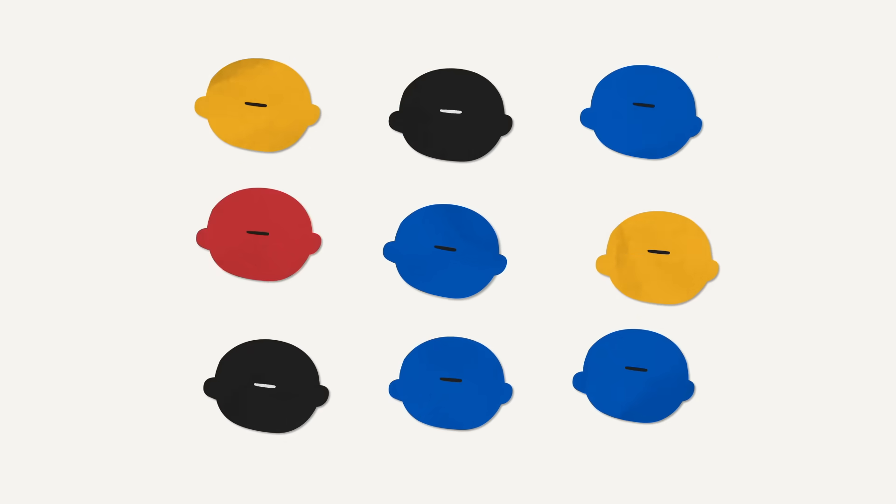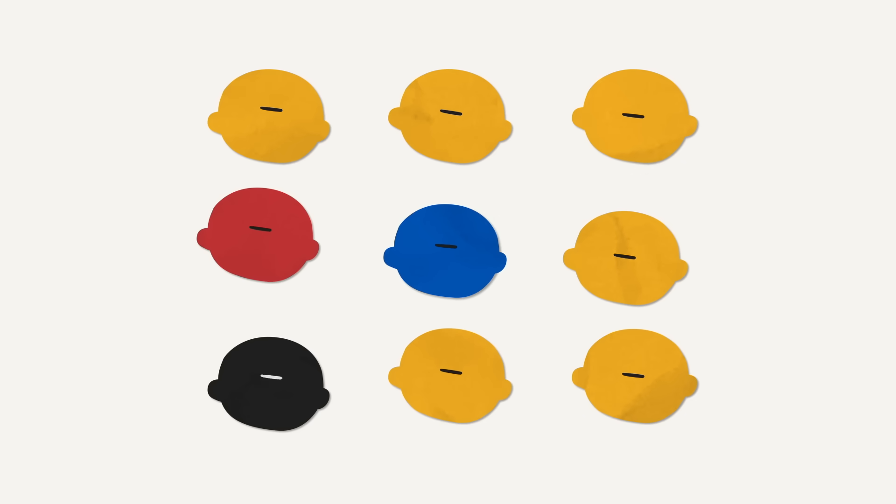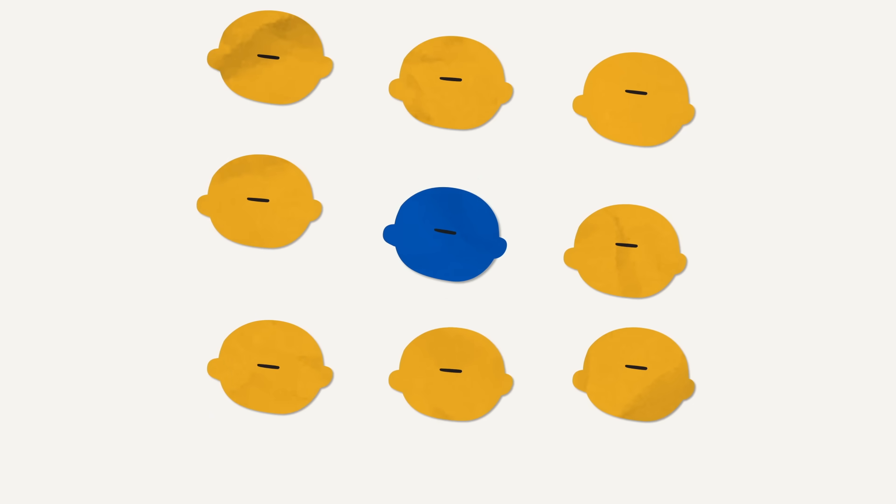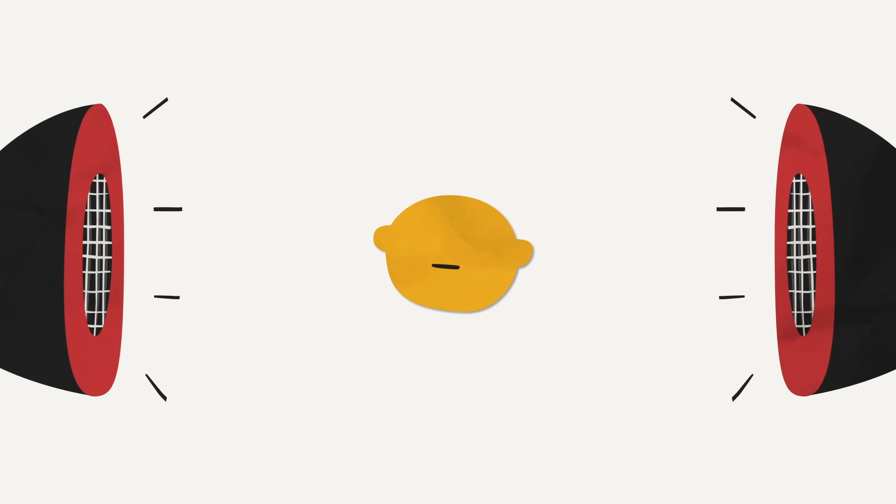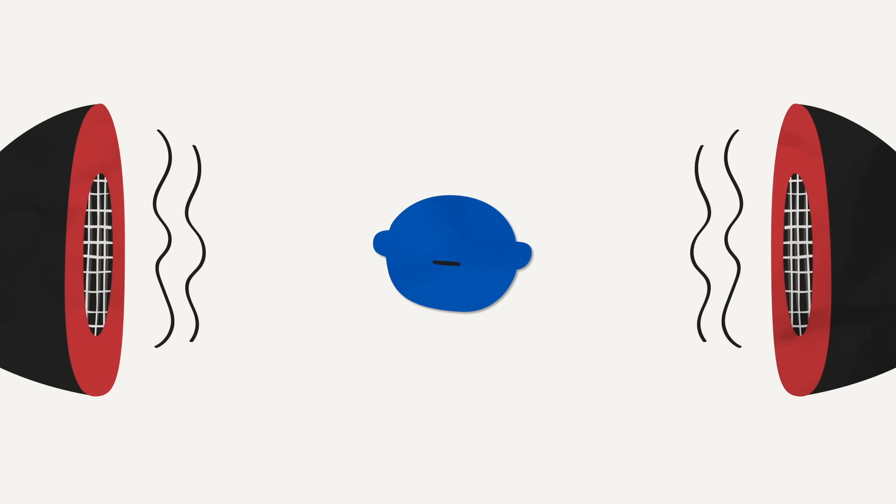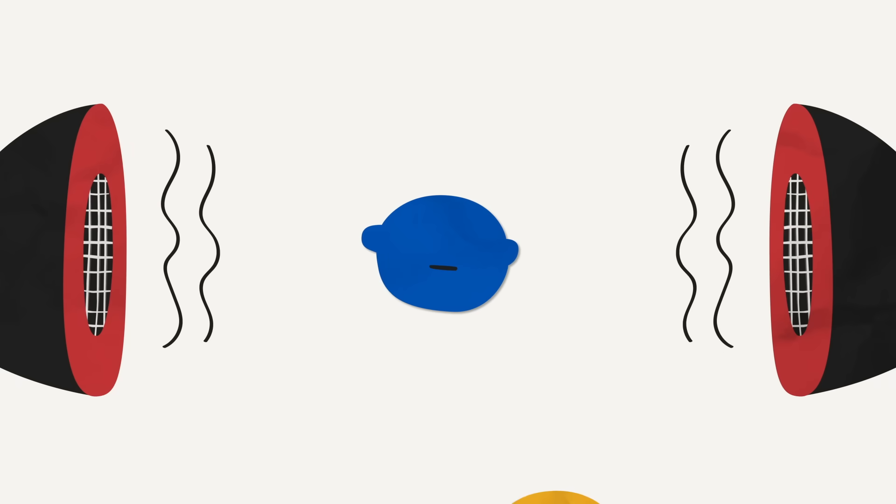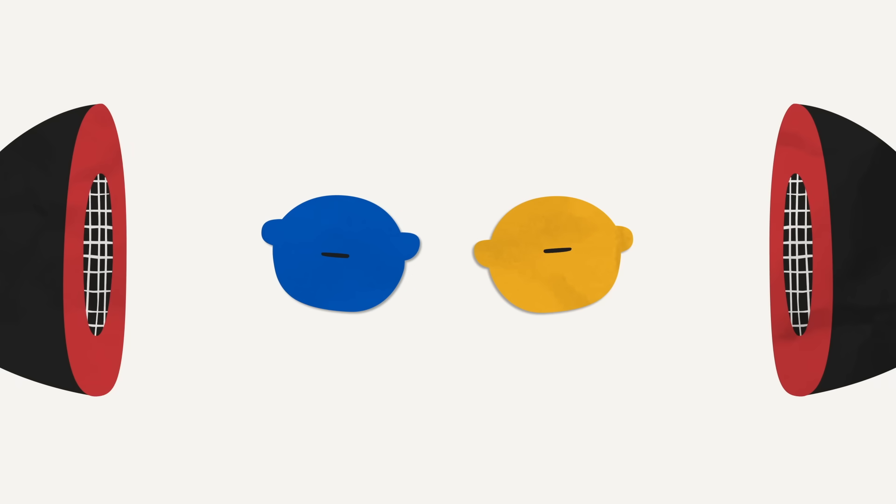Barnes herself favours the mere difference view, which says that being disabled is neither inherently good nor bad. It's merely different. For example, just as hearing people can have auditory experiences of music that deaf people can't, deaf people can experience music through vibrations in ways hearing people can't. The two are simply different experiences.